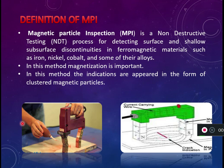MPT can also be called MPI — magnetic particle inspection — or MPE — magnetic particle examination. The name of any NDT method is given based on the inputs used. For example, in ultrasonic testing, high frequency sounds (ultrasonics) are introduced into the material. Similarly, in MPT we use magnets to introduce magnetic fields into the material.